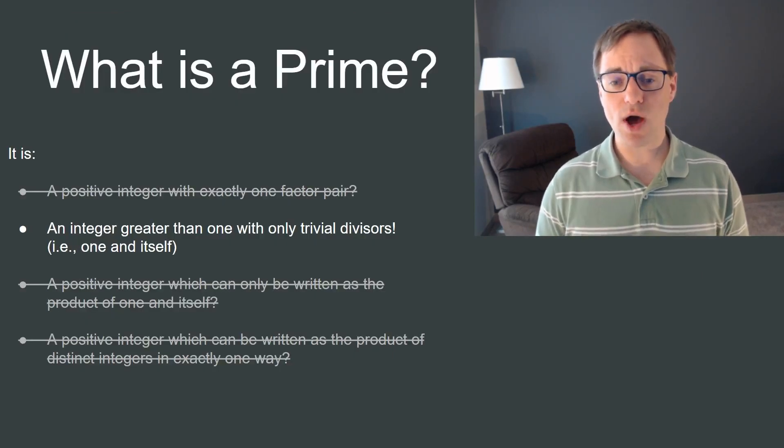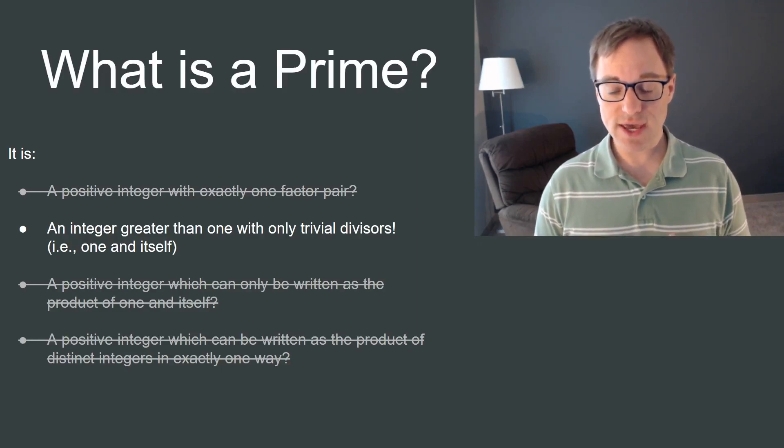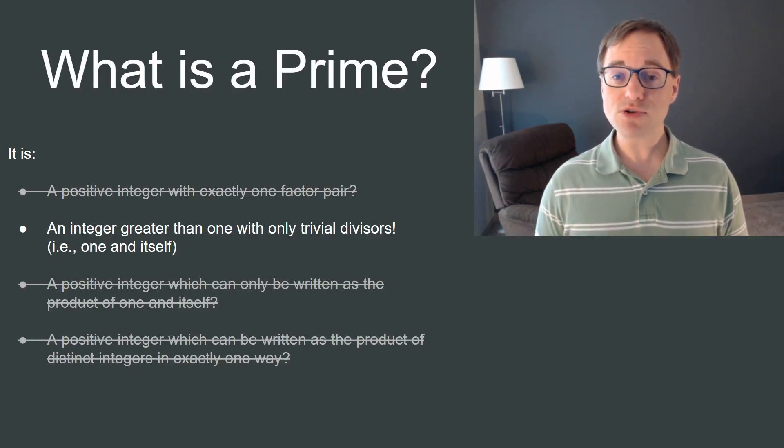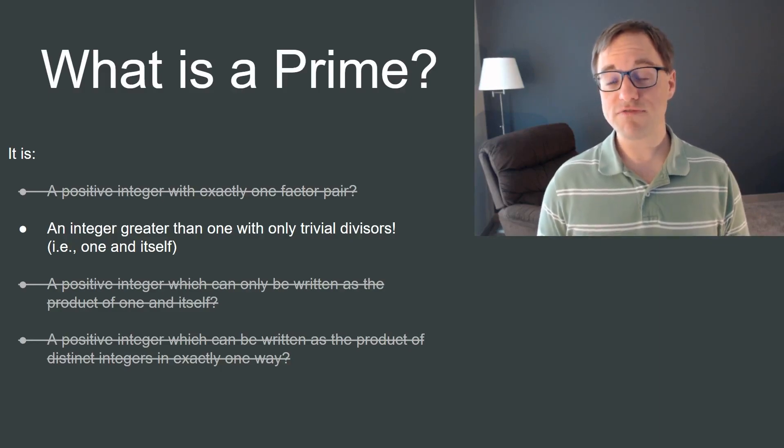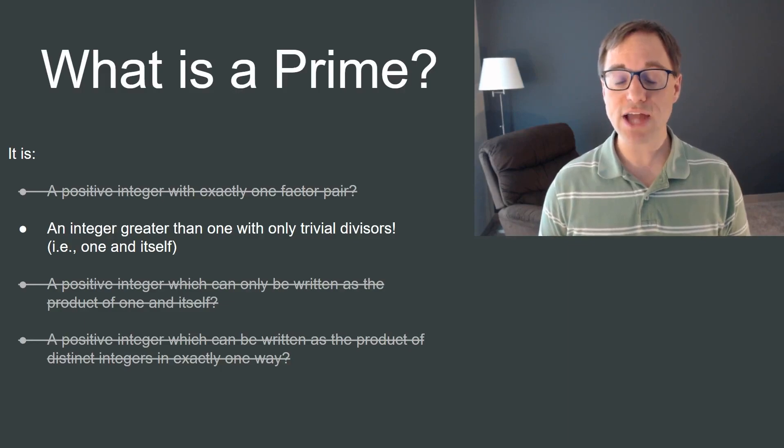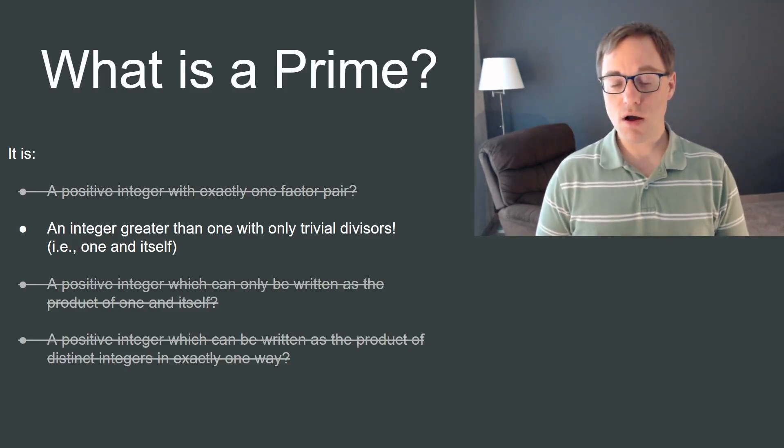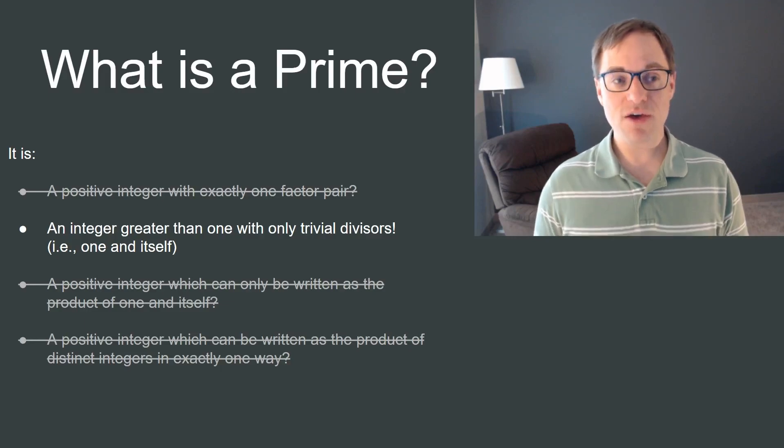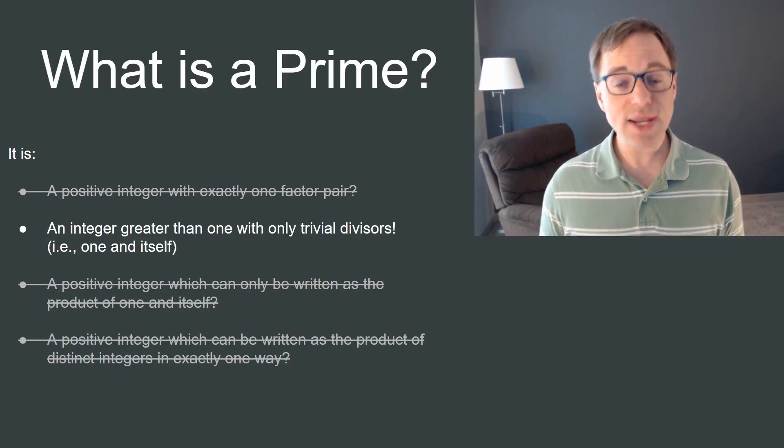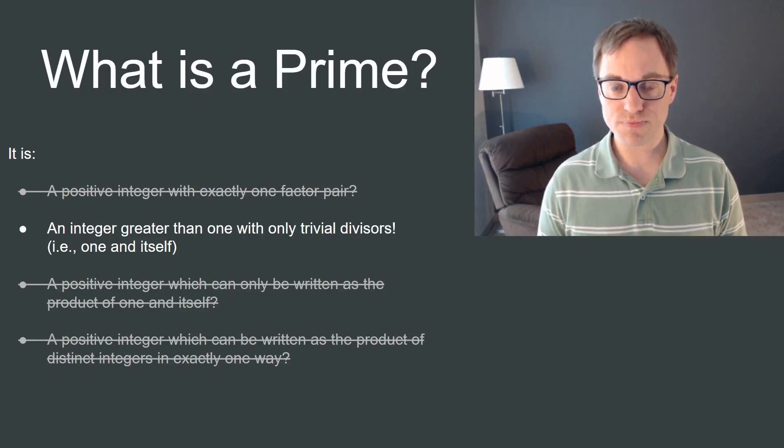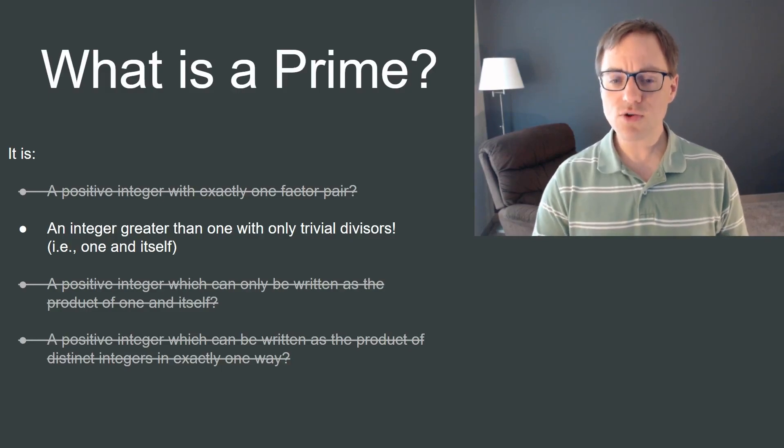Now perhaps the reason why Goldbach's convention of considering one to be prime was eventually abandoned, is that if we did consider one to be prime, many of the most important theorems involving primes would no longer be true. For example, the fundamental theorem of arithmetic, which states that natural numbers can be factored into primes and can be done so uniquely. On the other hand, there are many theorems which only hold for odd primes, so perhaps there's an argument to be made that two shouldn't be counted as prime. In any case, at least for now, it's still considered to be part of the club. So now that we have a clear definition and a bit of historical context, let's look at some simple examples.